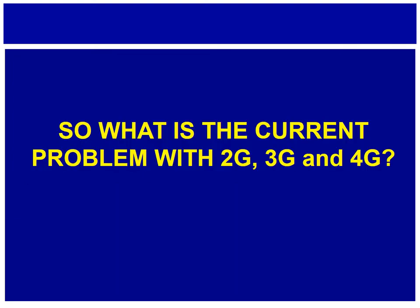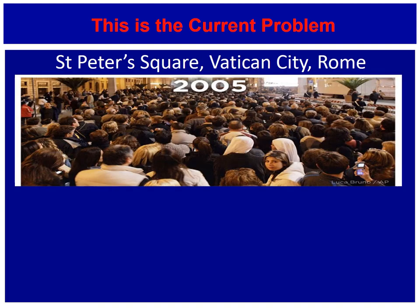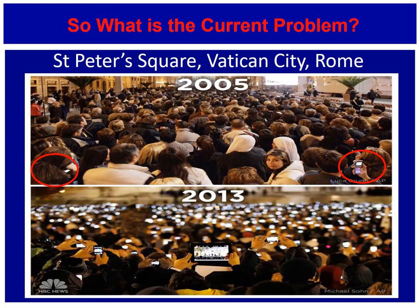So we've got 4G phones and they're pretty good — what is the current problem? In St. Peter's Square, Vatican City in Rome in 2005, if you look closely, there are only about 2 mobile phones. Fast forward to 2013, and everyone is taking pictures, taking videos, and sending these back to their friends.